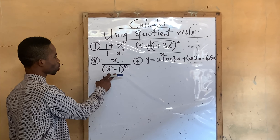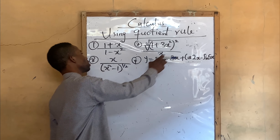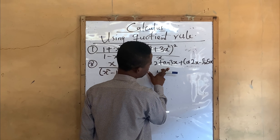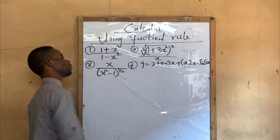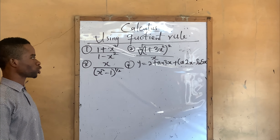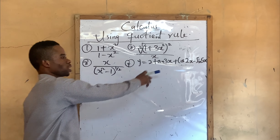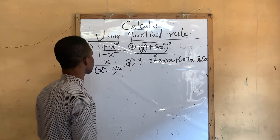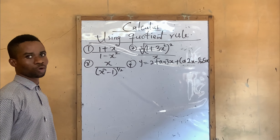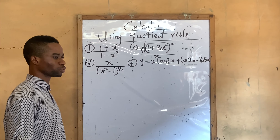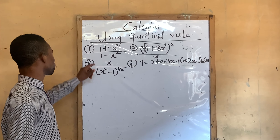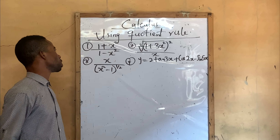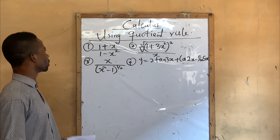This is talking about quotient rule. But this one is also talking about the function of a function. I'm going to take it from simple to complex. I'm going to do number 1 and number 4 first, before we do number 2 and 3.